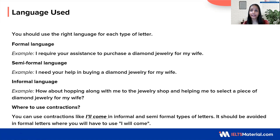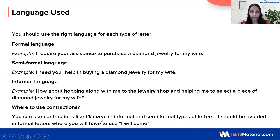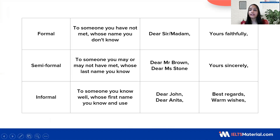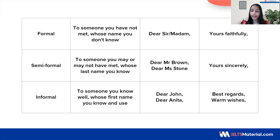Another thing to keep in mind is the use of contractions. You can use the short form or the contractions in informal and semi-formal letters, but do not use them in formal letters. For example, you can write I'll come — that's a contracted form. You can use that in informal and semi-formal, but when it comes to formal letters, you should write the full form: I will come. There's also a difference in the way you open the letter and close it. It differs for formal, semi-formal and informal letter.